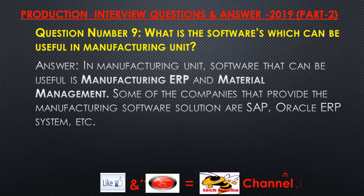Question number nine: What software can be useful in a manufacturing unit? Answer: In a manufacturing unit, useful software includes manufacturing ERP and material management systems. Some companies that provide manufacturing software solutions are SAP, Oracle ERP System, etc.